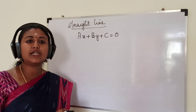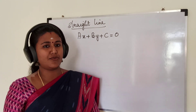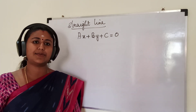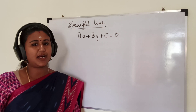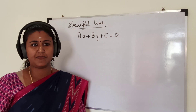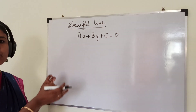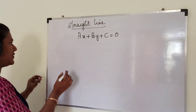Now we will see how can we reduce this general form into various forms — that is slope-intercept form, intercept form, and normal form. First we will see how can we reduce this into slope-intercept form.